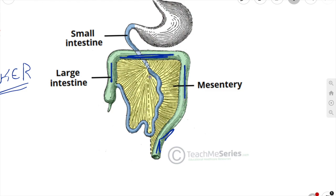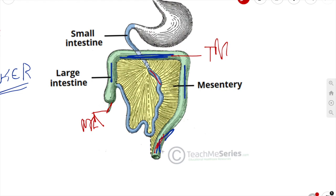The small intestine has a mesentery which attaches posteriorly. The sigmoid colon has its own mesentery called the sigmoid mesentery. The appendix has its own mesentery called the mesoappendix. The transverse colon has its own mesentery called the transverse mesocolon. It's just a double layer folding of your peritoneum which attaches these intraperitoneal organs to the posterior abdominal wall.